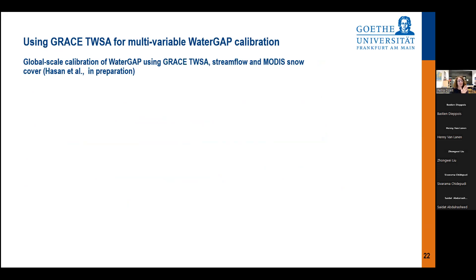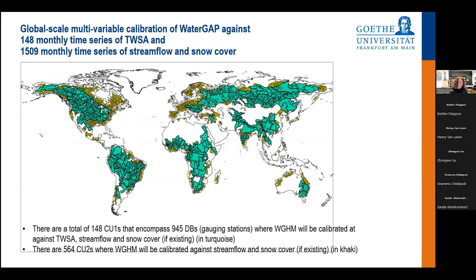We are now planning a global-scale calibration of Water GAP using GRACE TWSA, stream flow, and MODIS snow cover. A key challenge is reconciling the different spatial scales: the 1,509 small calibration basins used for stream flow versus the 148 larger basins (each over 200,000 square kilometers) required for GRACE. Our plan is to incorporate all stream flow measurements within large basins without creating separate calibration units for each small stream flow unit.